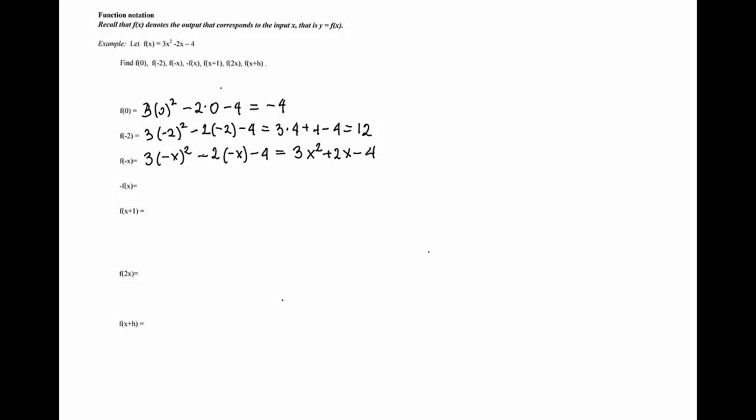Then we are to evaluate -f(x). So we are to evaluate the opposite of y. The opposite of y, which is 3x² - 2x - 4, will result in -3x² + 2x + 4 when we distribute the negative sign.